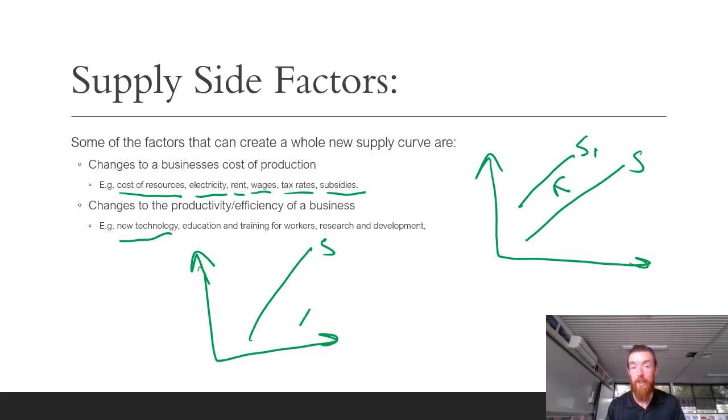Your costs haven't changed, but you're suddenly able to supply more at the same price, therefore causing a favorable shift overall. Another thing that can cause that is research and development, where you're learning new ways to produce that are going to maximize your efficiency overall.